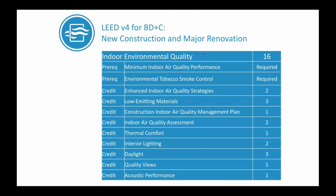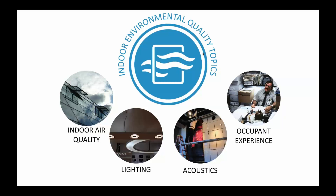Looking at LEED V4 for buildings and construction, the indoor environmental quality category covers many topics: minimum indoor air quality performance, environmental tobacco smoke control, enhancement strategies, mitigating air pollutant sources with low-emitting materials, indoor air quality management plans, proper indoor air quality assessment, and designing for thermal comfort, lighting, and acoustic performance. For today's session, we will focus on indoor air quality and thermal comfort.